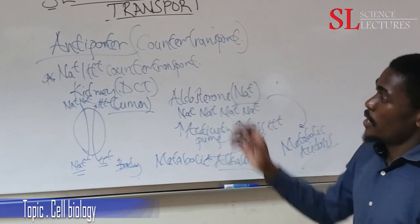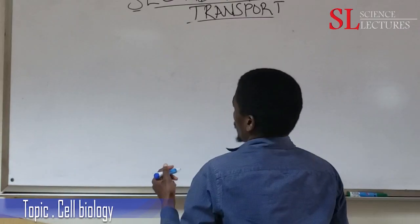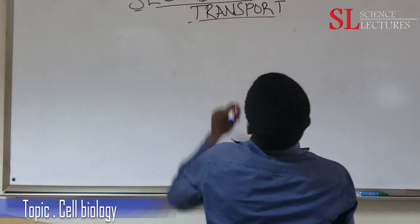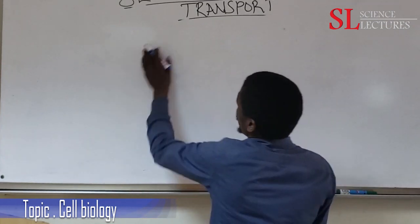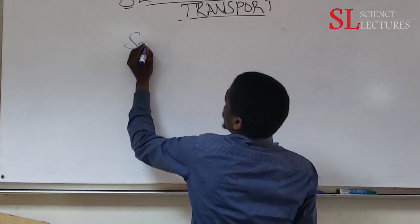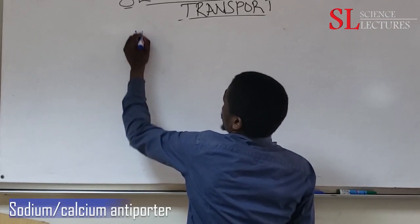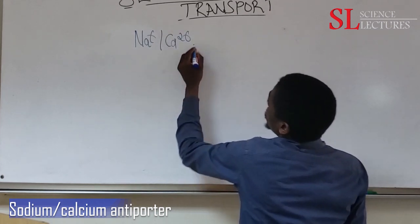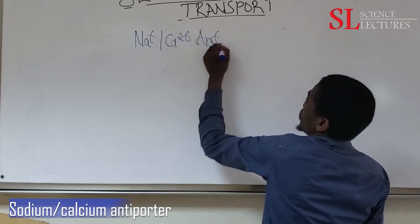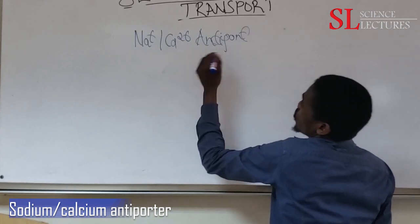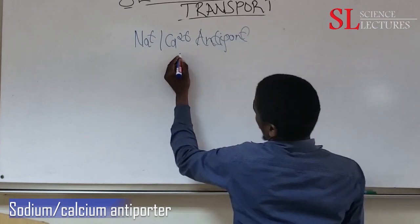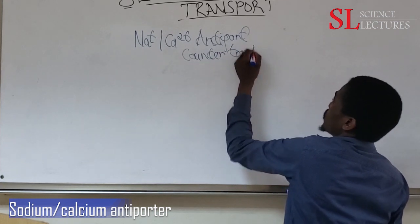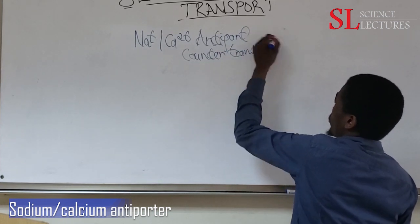Our fourth example under secondary active transport is the sodium-calcium antiporter, also called sodium-calcium counter-transport. This is another example where two molecules are transported in opposite directions.